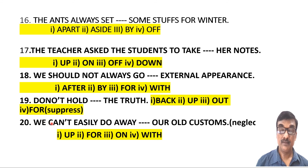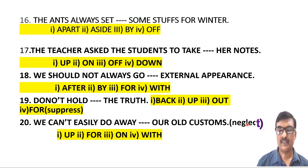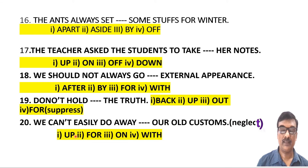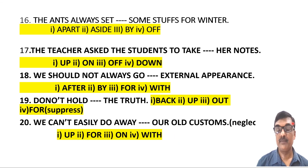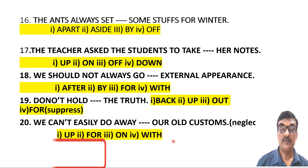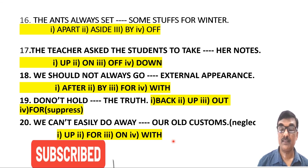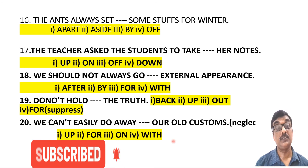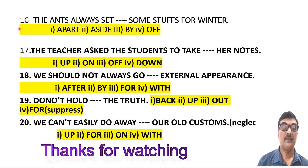The last example for today: 'We can't easily do away [blank] our old customs.' The meaning of the phrase is 'neglect.' In some cases the meaning is provided, and you must know which phrasal verb matches it — if you don't know phrasal verbs and their meanings, it is very difficult to use prepositions correctly. So it is better to learn them by heart. The answer is: 'We can't easily do away with our old customs.' That's all for today. Please subscribe to my channel and press the bell icon so that my new videos reach you immediately.